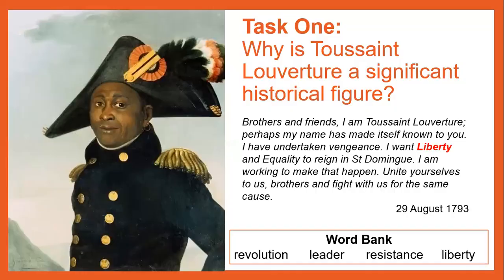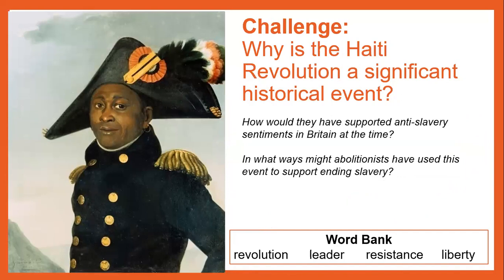Your first task: why is Toussaint Louverture a significant historical figure? Think about what he wrote on the 29th of August 1793. To help you complete this task, you might use the words revolution, leader, resistance and liberty. Pause here to complete this task on paper. Your challenge is to describe why the Haitian Revolution was a significant historical event — how would it have supported anti-slavery sentiments in Britain at the time, and in what ways might abolitionists have used this event to support ending slavery? Pause here to complete this.